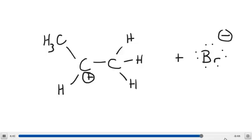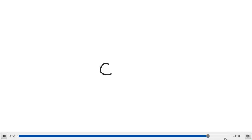And what it will do is it will donate some of its lone pair electrons to this carbocation. And as a result of that, you will make your alkyl halide.